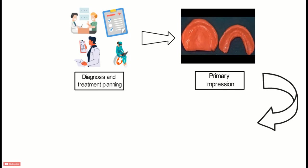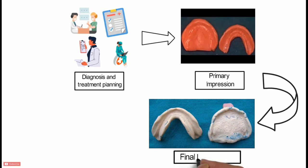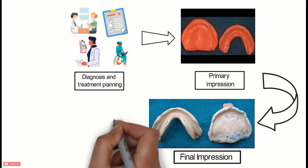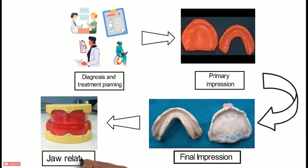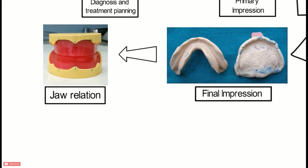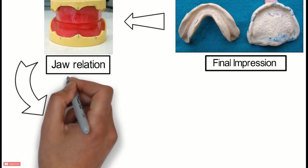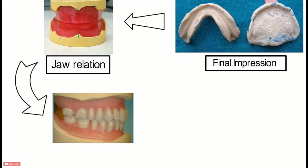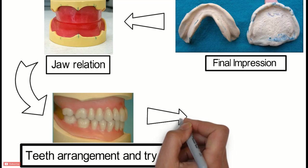The next step is the making of the final impression. The primary cast made from the primary impression helps in final impression making. Green stick is used generally for border moulding. The wash impression is then made using zinc oxide eugenol impression material. After the final impression is made, master casts are made for recording the jaw relation. After correctly recording the jaw relation, the casts are mounted on the articulator. Then teeth arrangement is done and the type of occlusal scheme suitable for the patient is decided. After teeth arrangement is the wax try-in, followed by the fabrication of the complete denture.